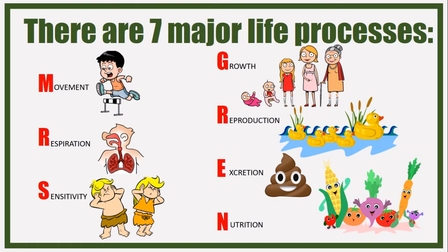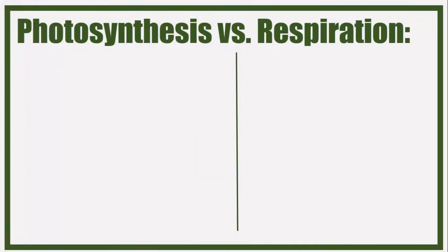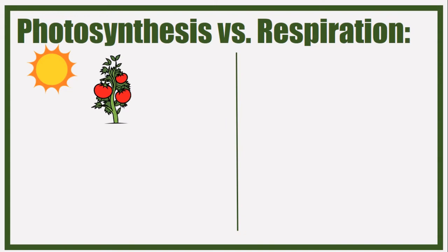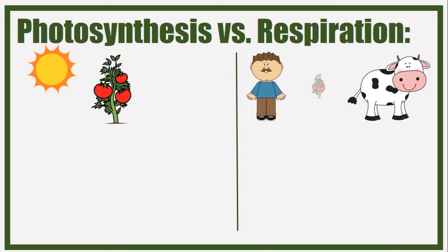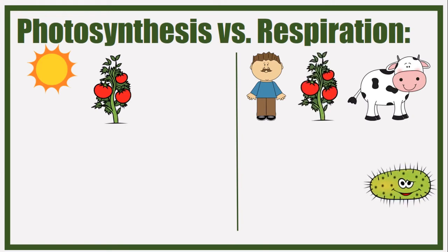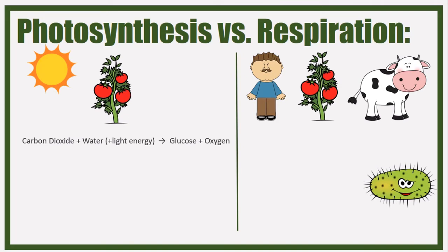Now, photosynthesis versus respiration. Photosynthesis occurs only in plants, whereas respiration occurs in humans, animals, plants, and microorganisms. The word equation for photosynthesis is: carbon dioxide plus water plus light energy gives glucose plus oxygen.